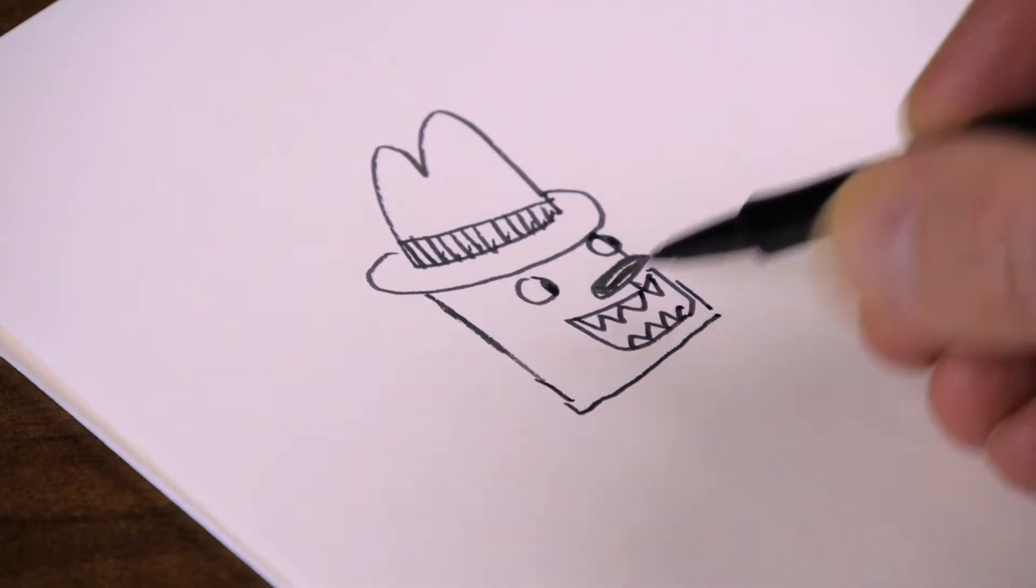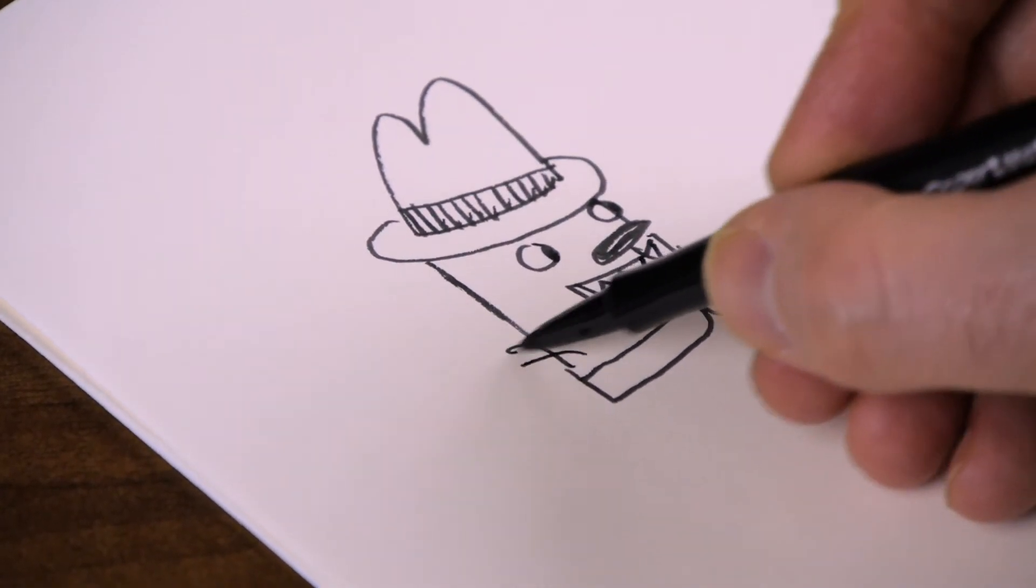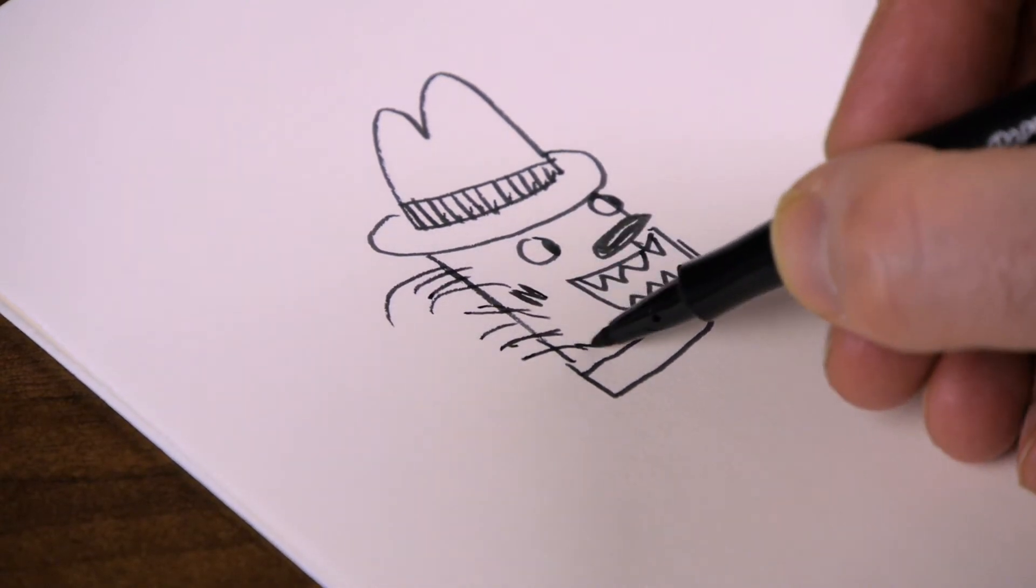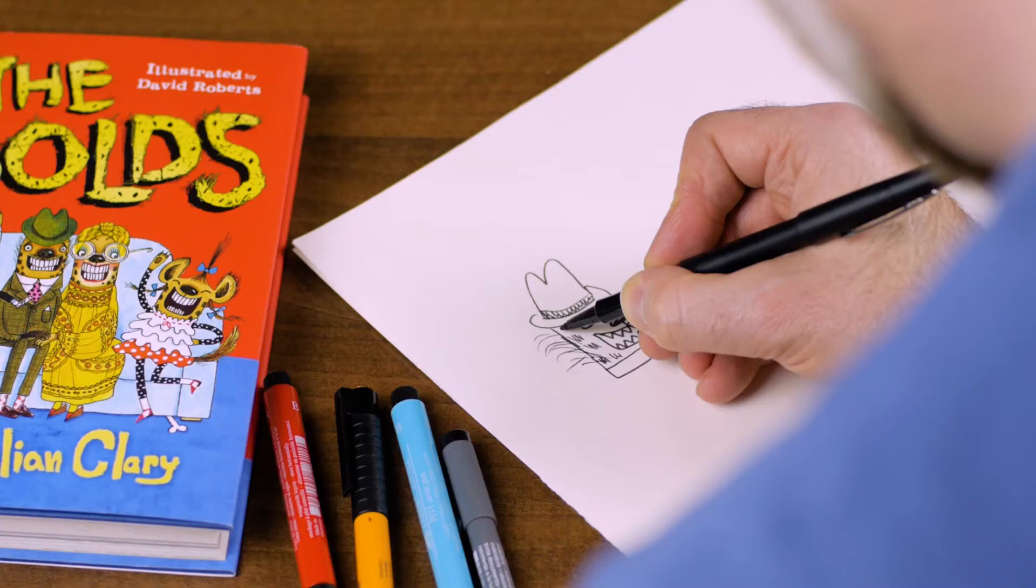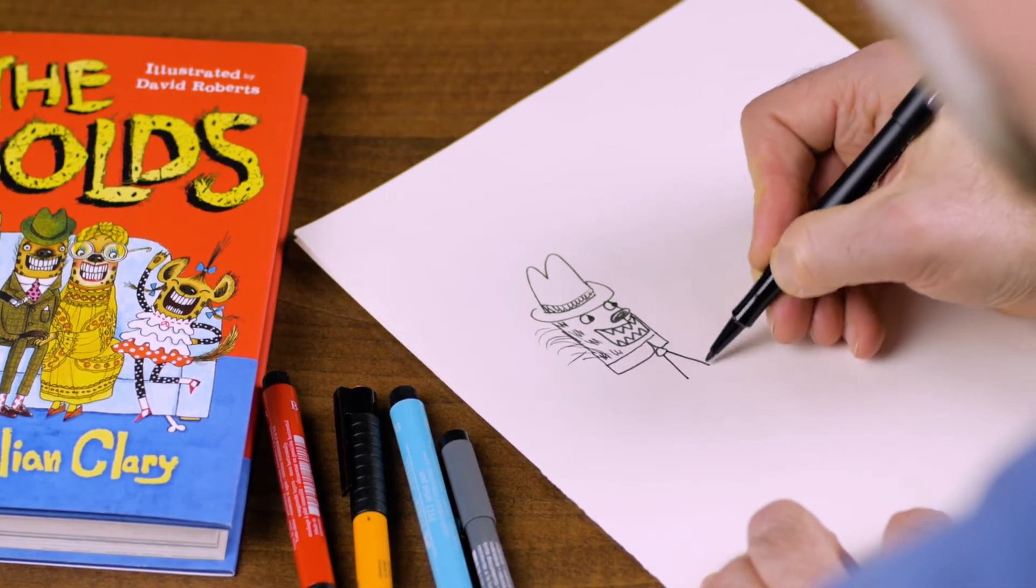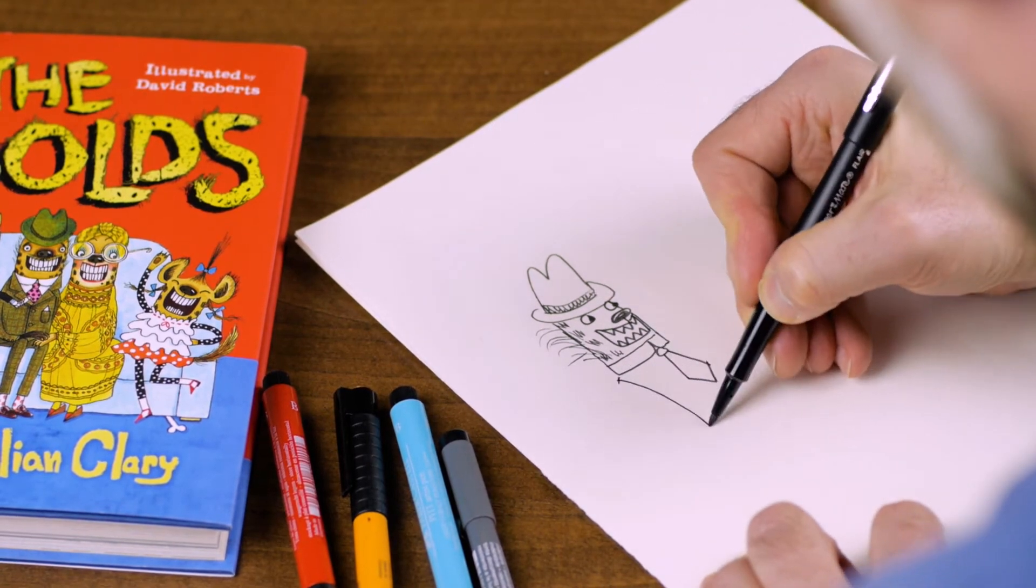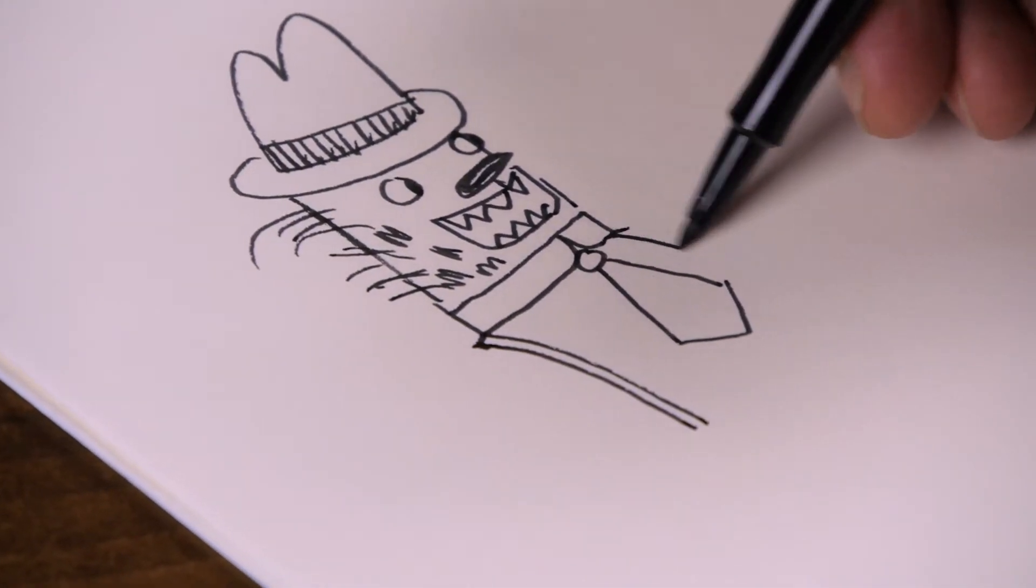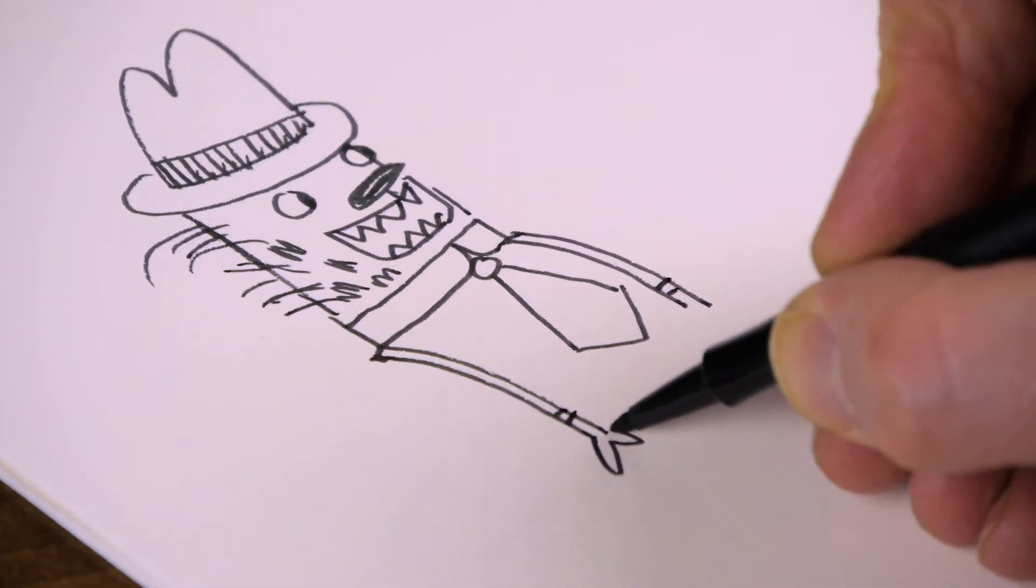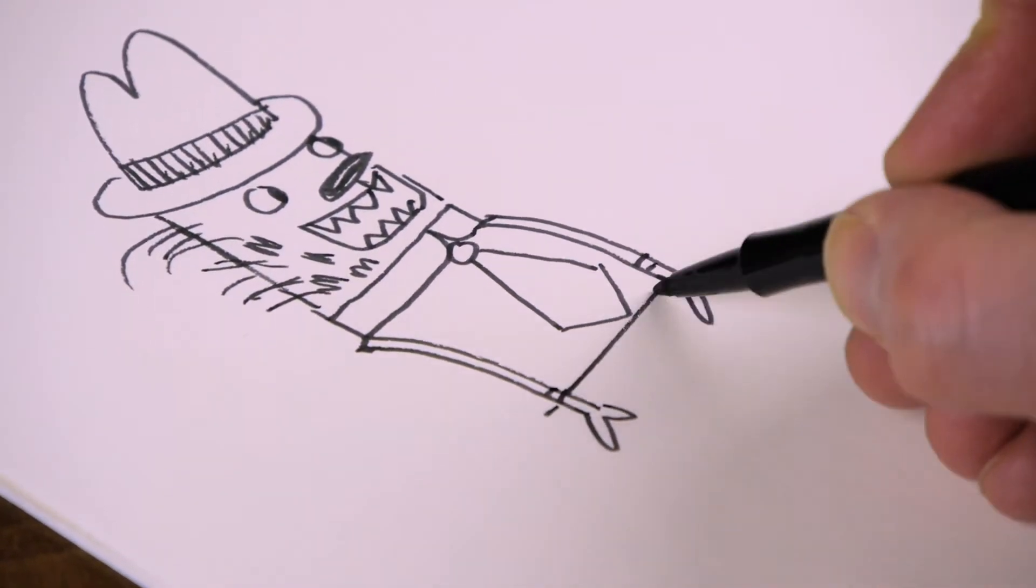And this is the line of the collar to his shirt, like so. He's very hairy, as we know. He has spotty fur. And then we give him a nice tie and a pair of braces. Just put the detail on there like this. And so that's the waistband to his trousers.